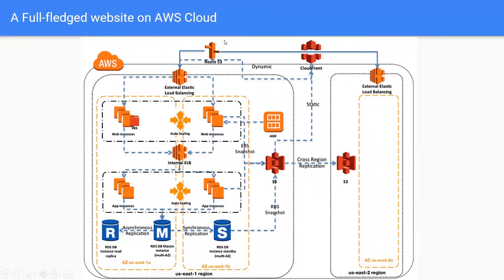To visualize what services are being used where, consider this example. When a client clicks on a particular link, Route 53 comes into action because it handles your DNS settings and DNS records. The user hits the link, initiating a request that comes to Route 53, which chooses the appropriate route and redirects it to a particular region. That then goes to an internet-facing load balancer, which selects an appropriate EC2 instance where your web server is running. Multiple web servers make up the web layer and are normally launched using an Auto Scaling group.